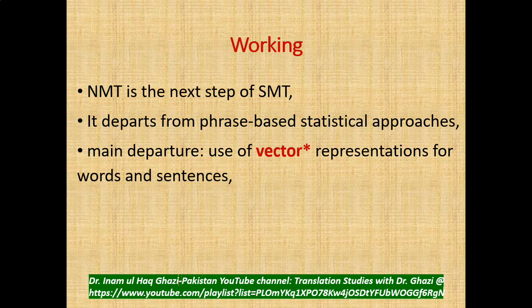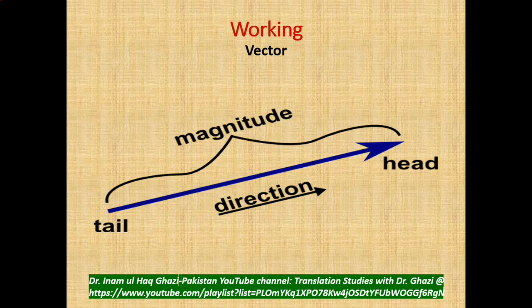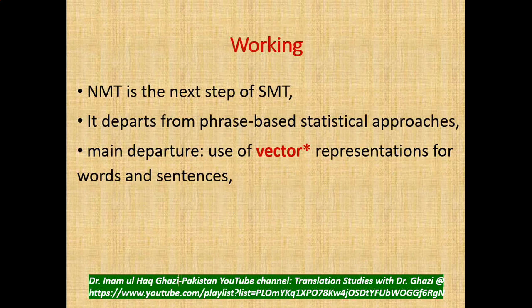Neural machine translation is the next step of SMT. It departs from the phrase-based statistical approaches. The main departure is the use of vector representations for words and sentences. A vector has two major elements: direction and magnitude — we see a tail and a head because of direction, and magnitude is also an essential part of the vector.